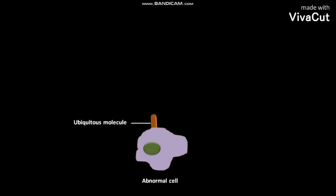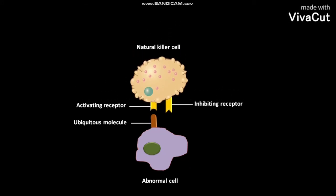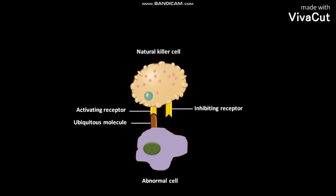The plasma membrane of an abnormal cell has only a ubiquitous molecule. The plasma membrane of the natural killer cell has both killer activating receptor and killer inhibiting receptor. The killer activating receptor recognizes the ubiquitous molecule. In the absence of MHC class 1 molecule, which acts as an inhibitory signal, the killer inhibiting receptor issues an order to the natural killer cell to attack and kill the abnormal cell.